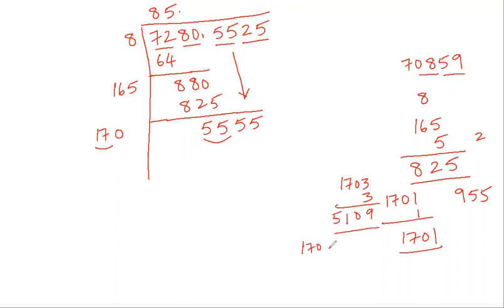1704: when you try with 1704, 4 times 4 is 16. 7 times 4 is 28, carry 2. 1 times 4 plus 1 plus 2 is 6. So no, this is wrong. It should be less than this. So it will be 1703 here. You'll put 3 here. You get 5109.